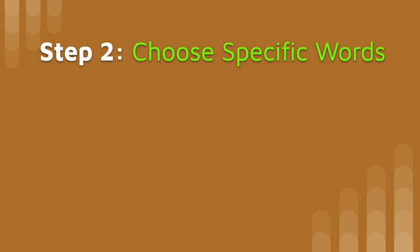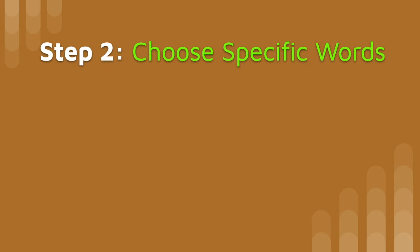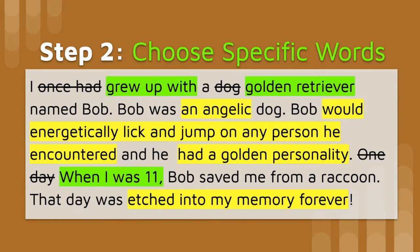The second step I do is to choose more specific words — pretty similar to descriptive language, but for this one we're looking for nouns: an object, a thing, or a person that are just kind of boring. So for this one I started off with that first sentence.